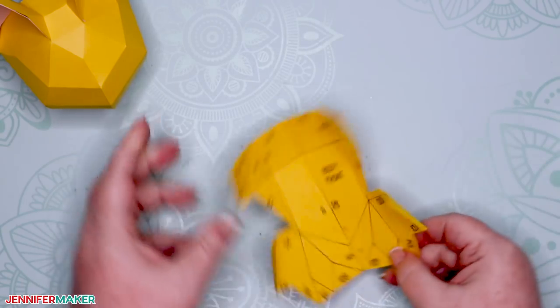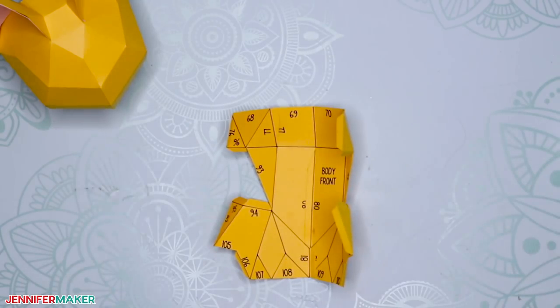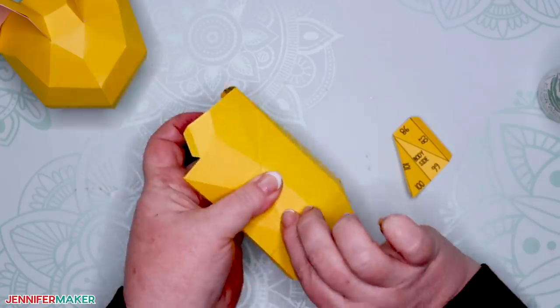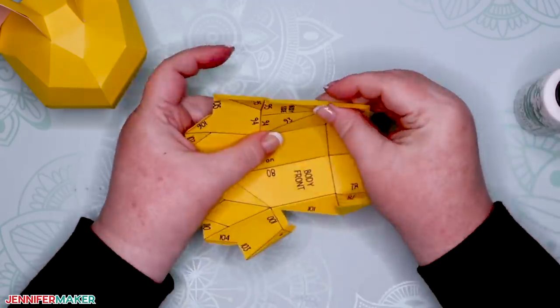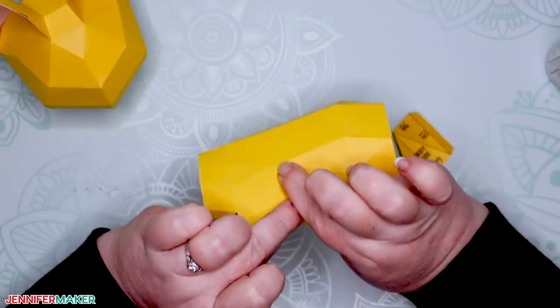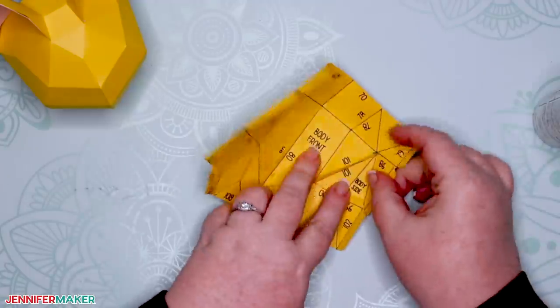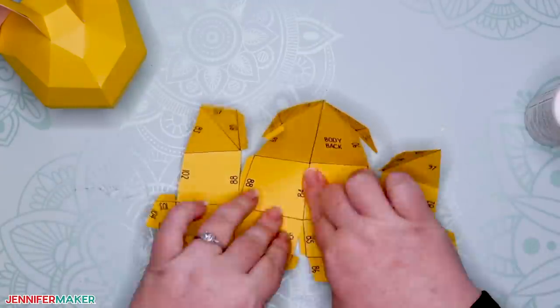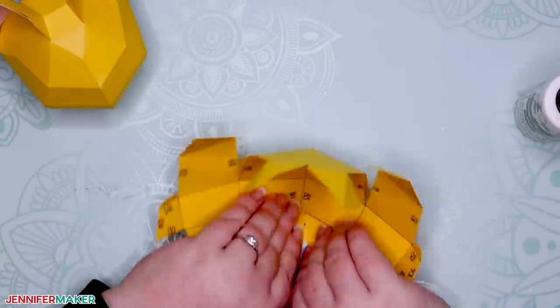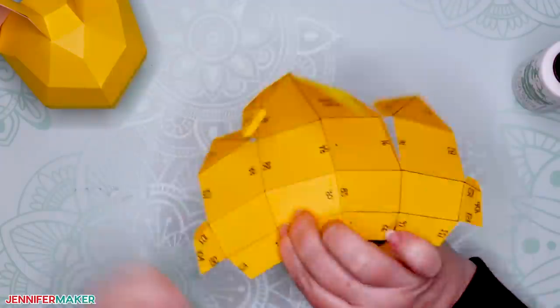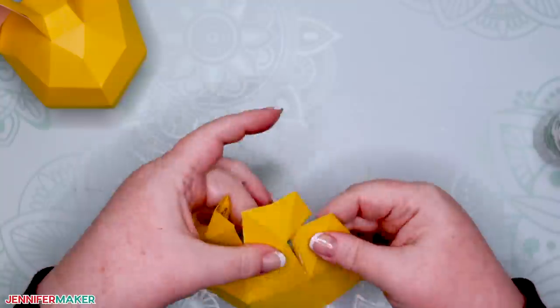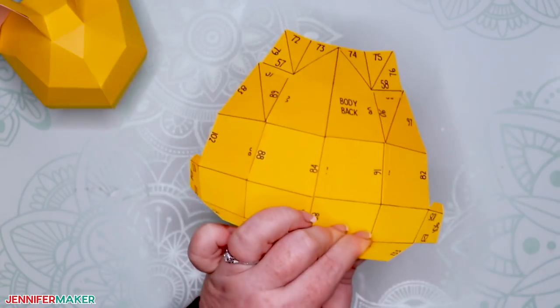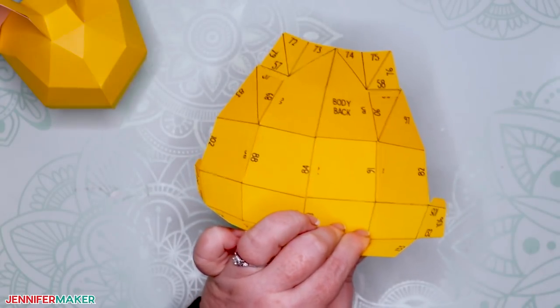Now glue and add the side pieces to the body front. They fit right into place like puzzle pieces. Once that's done, your next step is to glue and shape the body back piece, starting with tab number 84. And here's what the body back piece looks like when it's all glued and shaped.